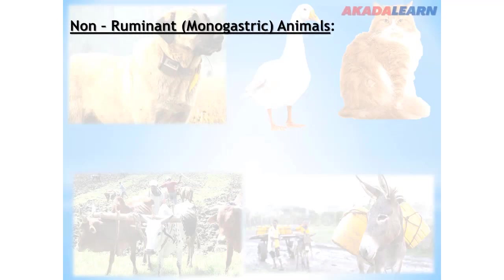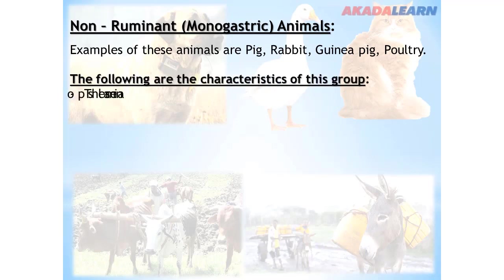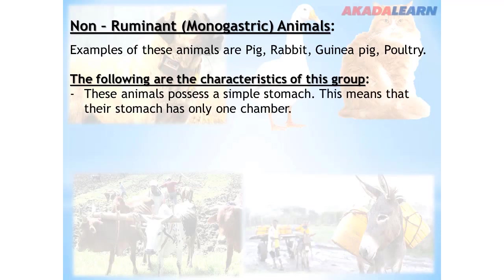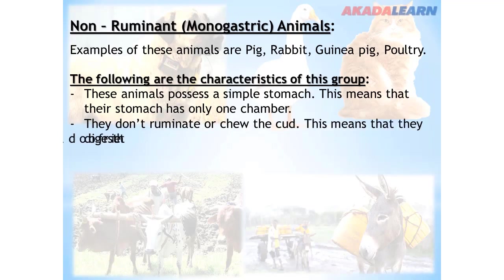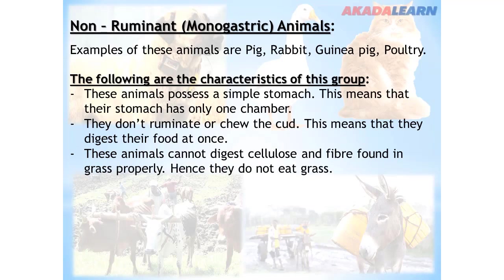Non-ruminant or monogastric animals include pigs, rabbits, guinea pigs, and poultry. These animals possess a simple stomach, meaning their stomach has only one chamber. They do not ruminate or chew the cud — they digest their food at once after swallowing. These animals cannot digest cellulose and fiber found in grass properly, hence they do not eat grasses.